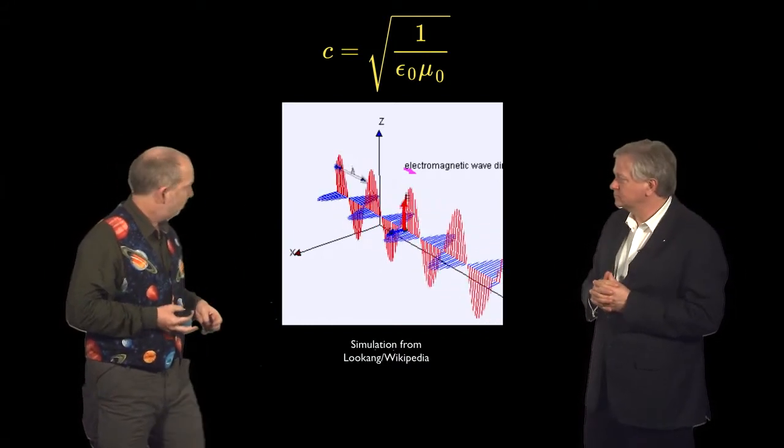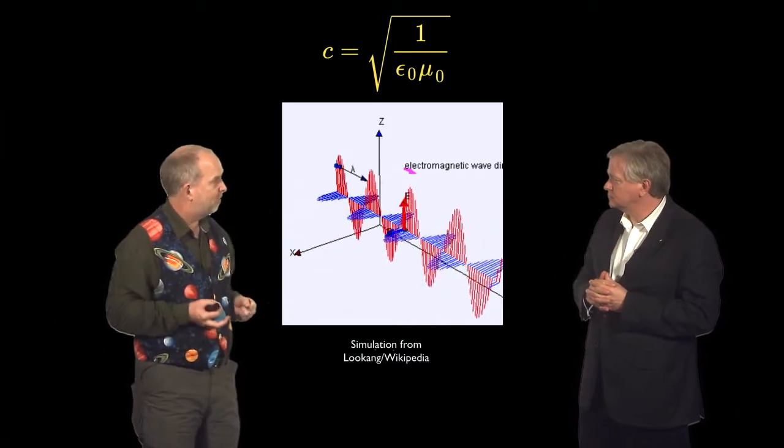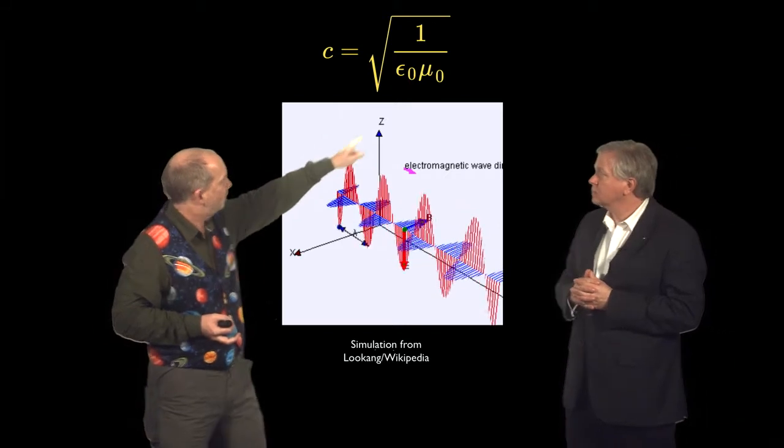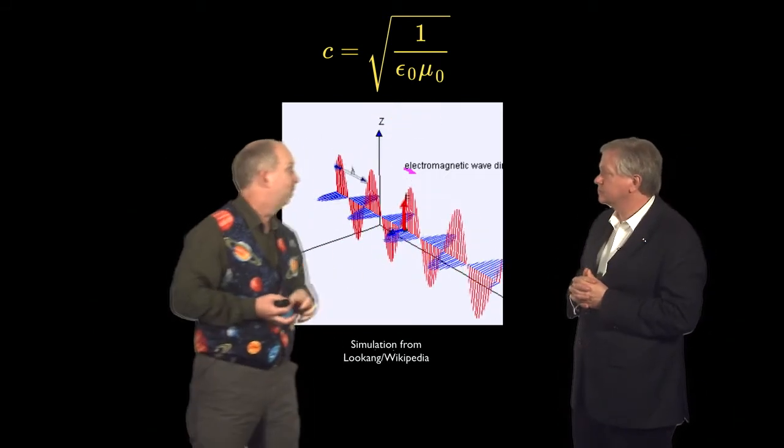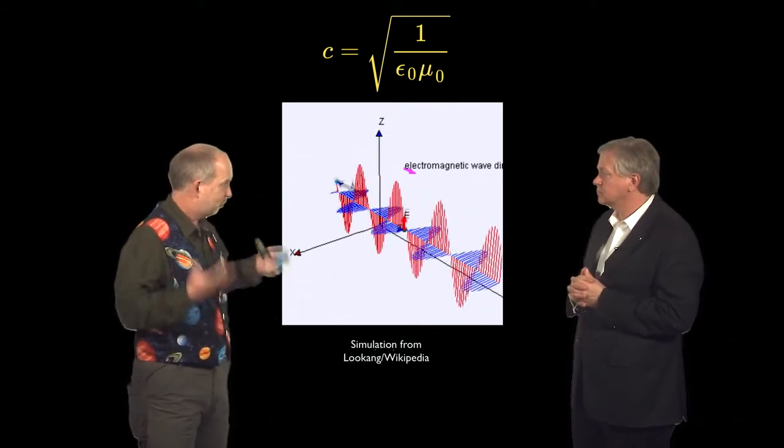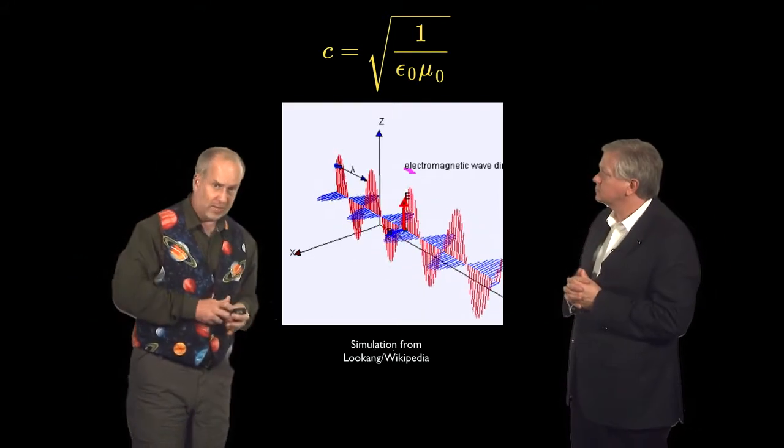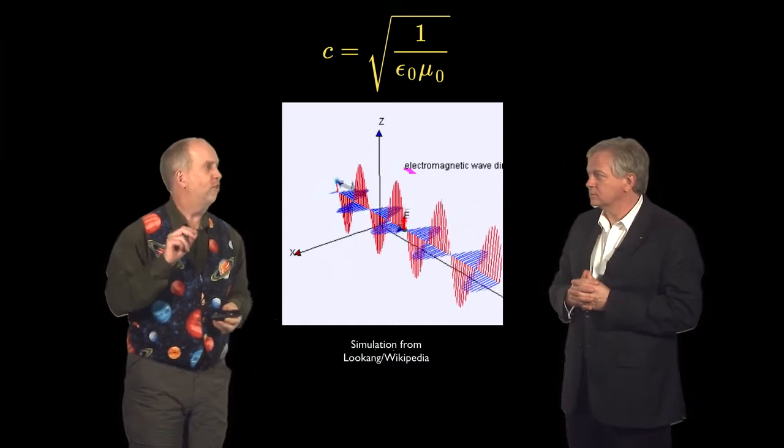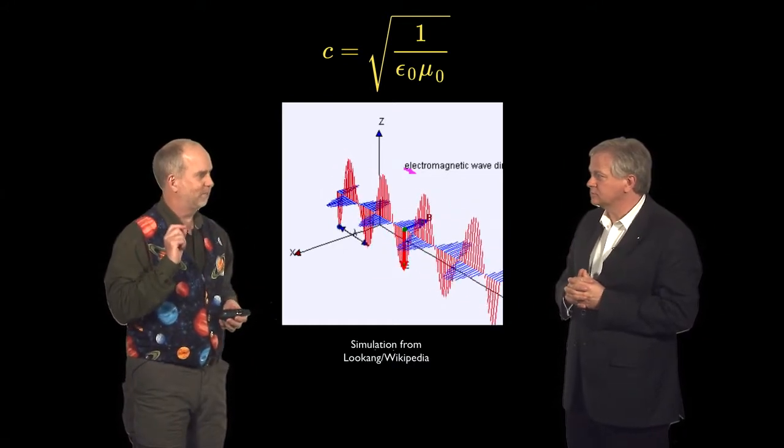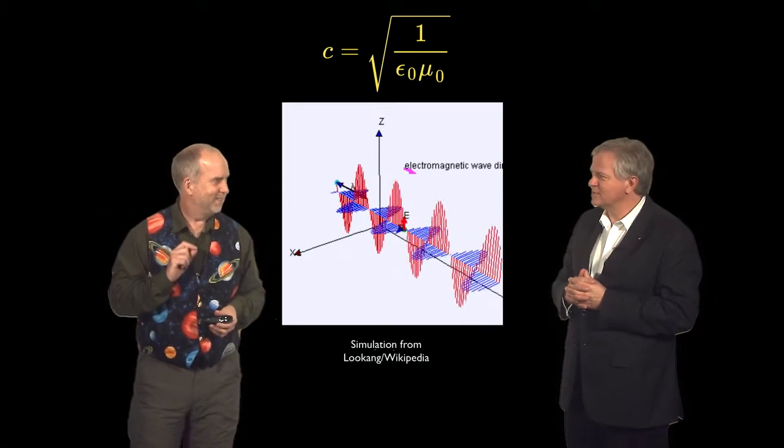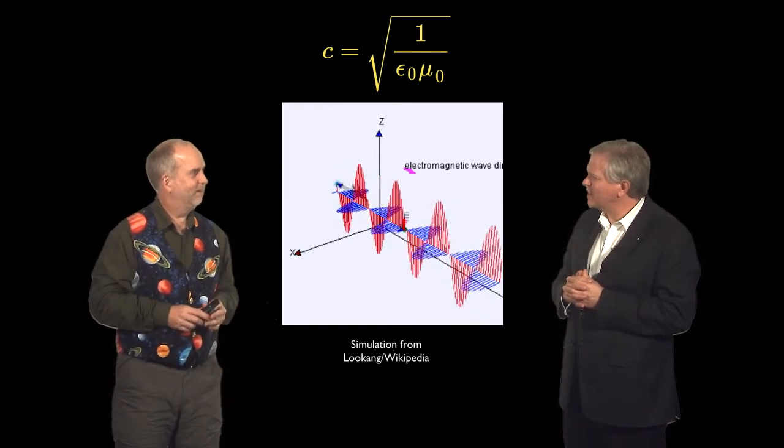He did the calculation, and you get a wave that looked like this, with the two components at right angles to each other, and calculated the speed. So it depends on two constants that can be measured in the laboratory, the constants of electrostatics and magnetic fields. And it came out with a velocity. And when they did the calculation, the velocity came out as 300,000 kilometers per second. That's a curiously familiar number. That is an interesting number. That sounds an awful lot like the speed of light.